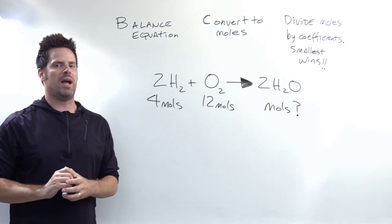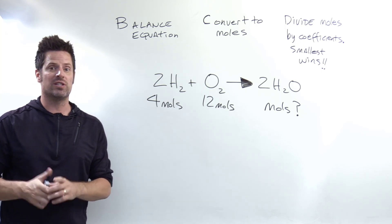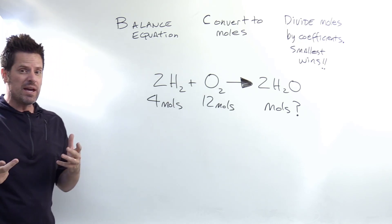This is a classic limiting reactant question. When it asks which of the following reagents in this situation runs out first, it's really asking which of these is a limiting reactant. So how do we do that?